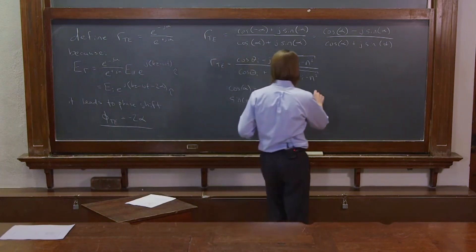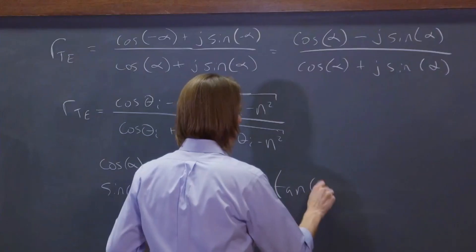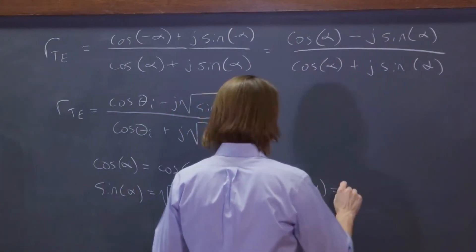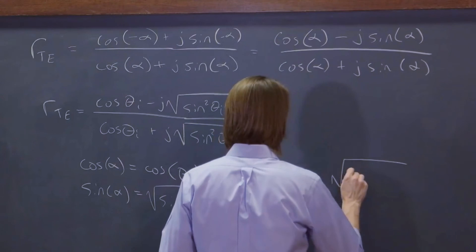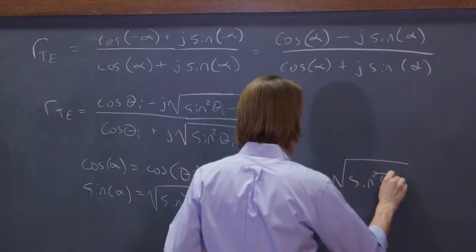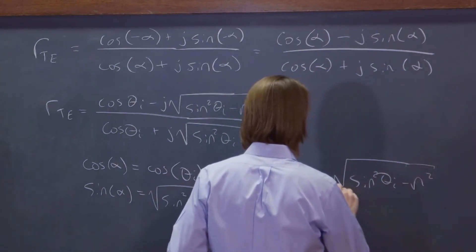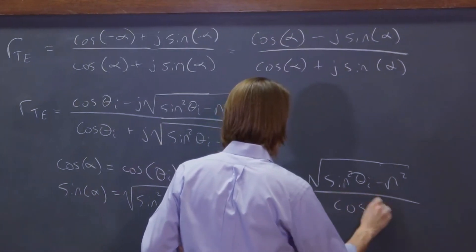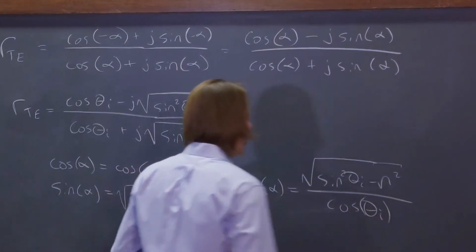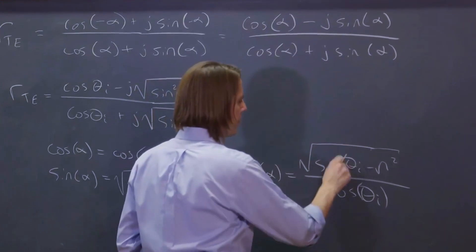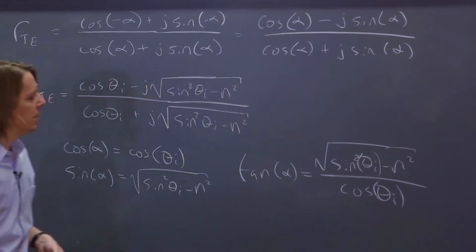And you find that tangent of alpha equals the square root of sine squared theta i minus n squared over cosine theta i like that.